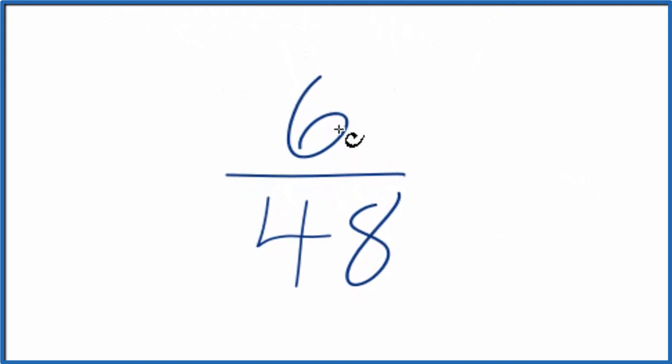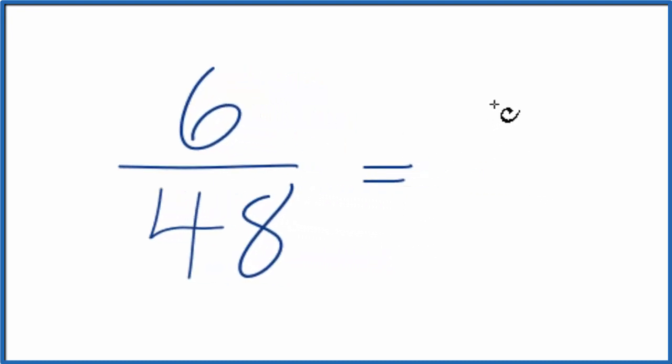If you know that six goes into forty-eight eight times, you could just do this. Divide six by six, that gives us one. Divide forty-eight by six, that gives us eight. So we could simplify six forty-eighths down to one-eighth, but you do need to know that six times eight gives us forty-eight.